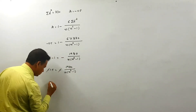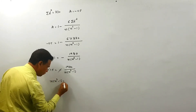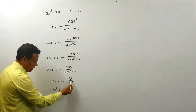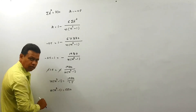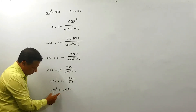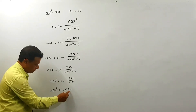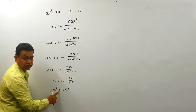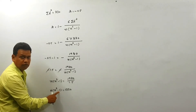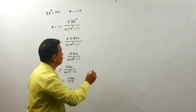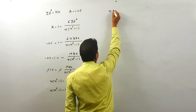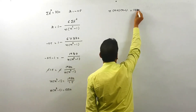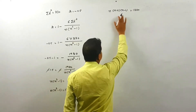Both sides are negative, so the negatives cancel. Rearranging: n(n² - 1) = 1980 / 1.5 = 1320. Now, n² - 1 is equivalent to (n+1)(n-1), so we have n × (n+1) × (n-1) = 1320. We need to find three consecutive numbers whose product is 1320.